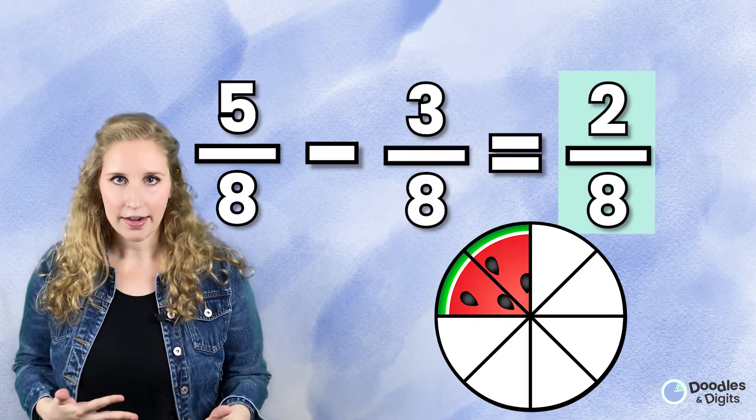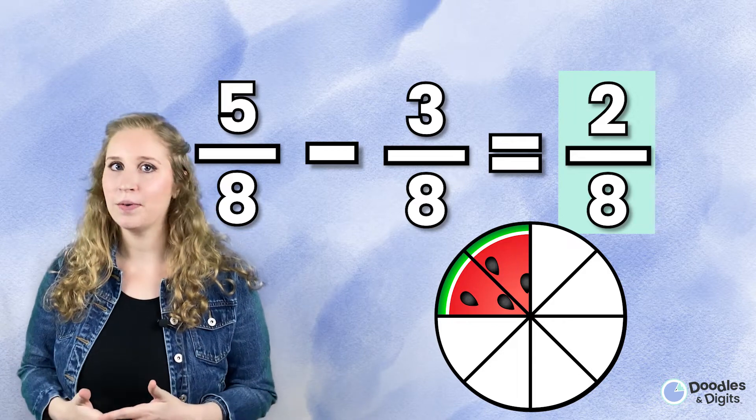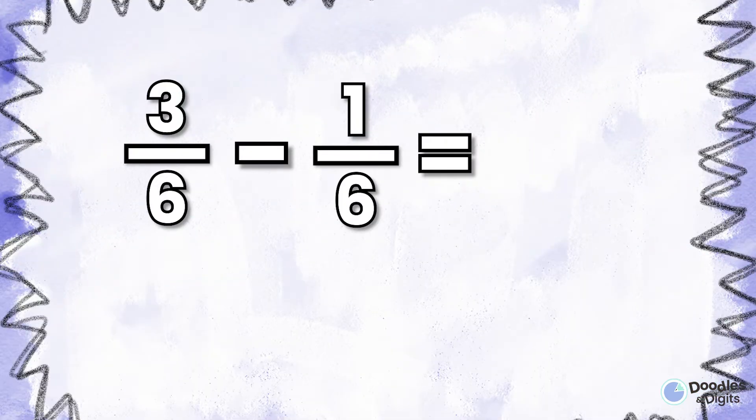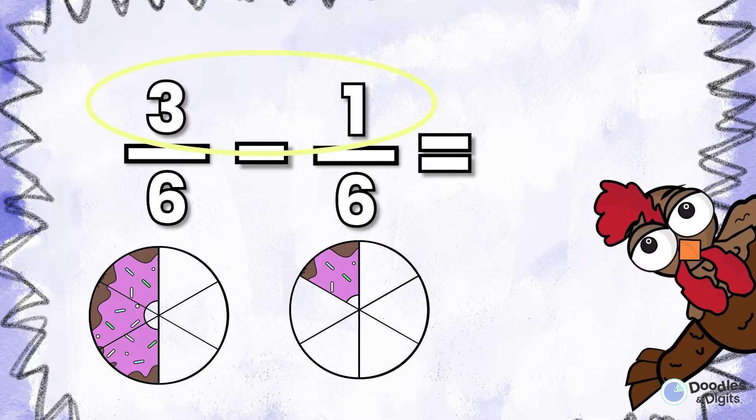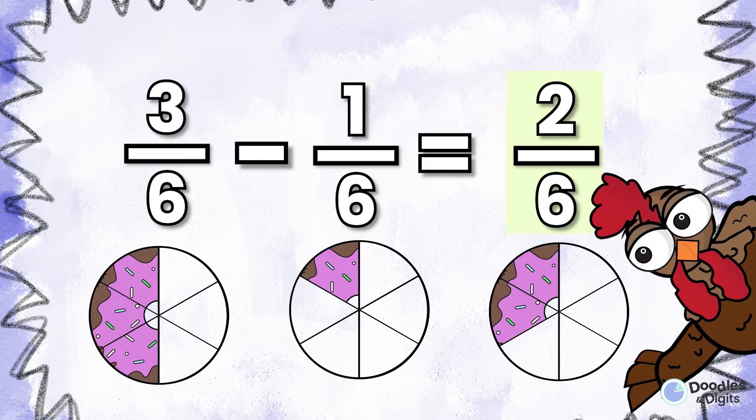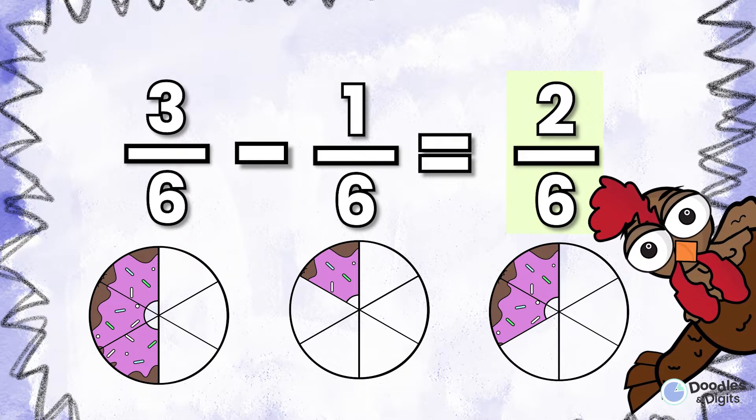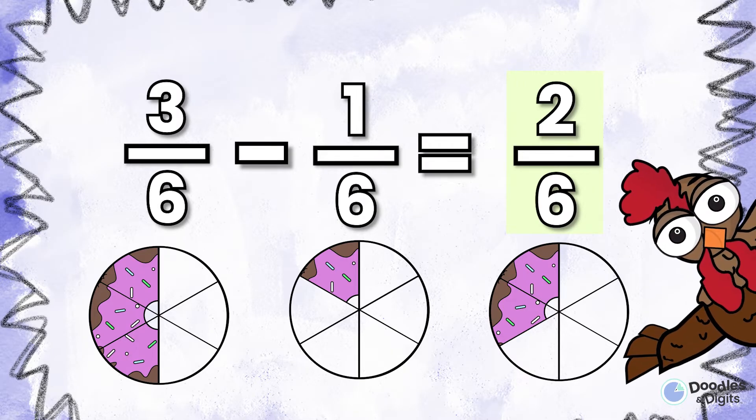Let's try another one. See if you can observe what I'm talking about. Three sixths minus one sixth. We're going to look at the numerator and subtract that because we're subtracting the number of pieces. Three minus one equals two. So three sixths minus one sixth equals two sixths.